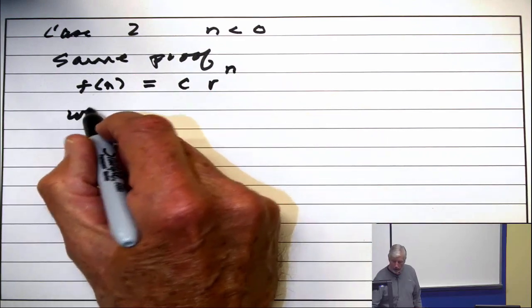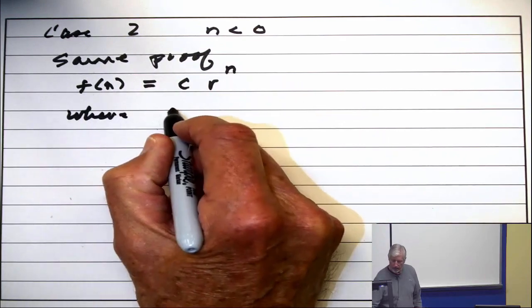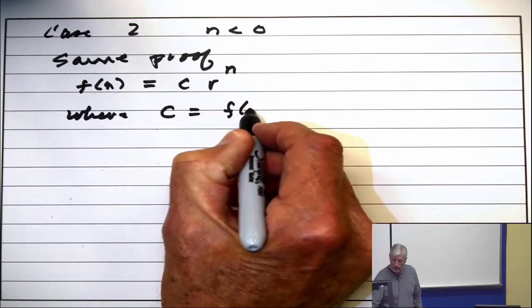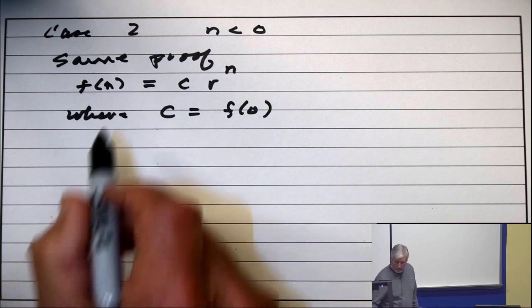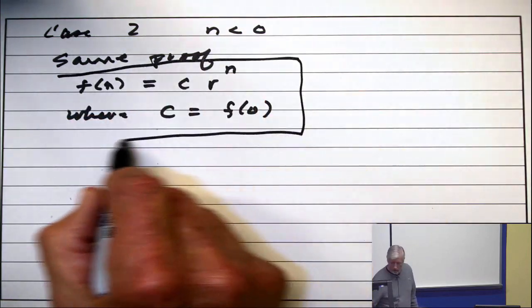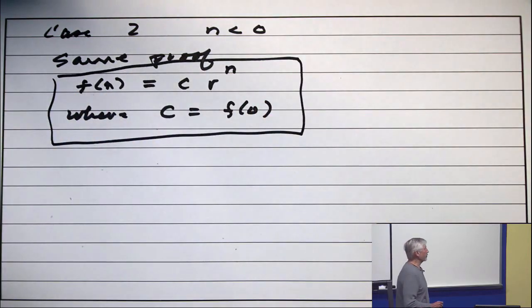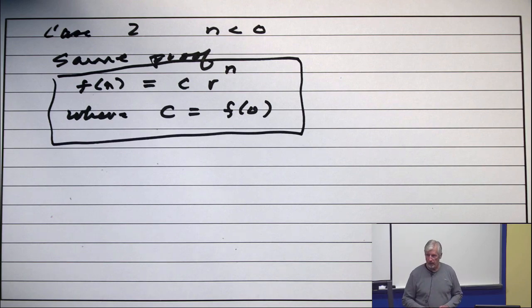And where is c? c is just the value f(0). So there is the answer. That's important. This is true regardless of what r is—it could be real, complex, as long as it's not 0.